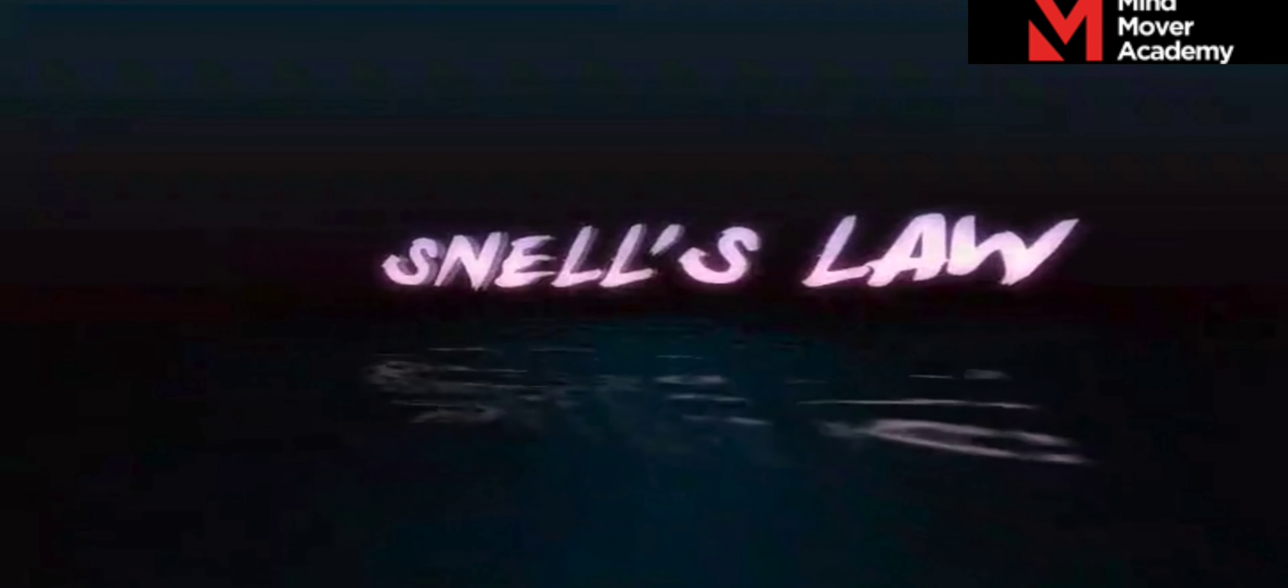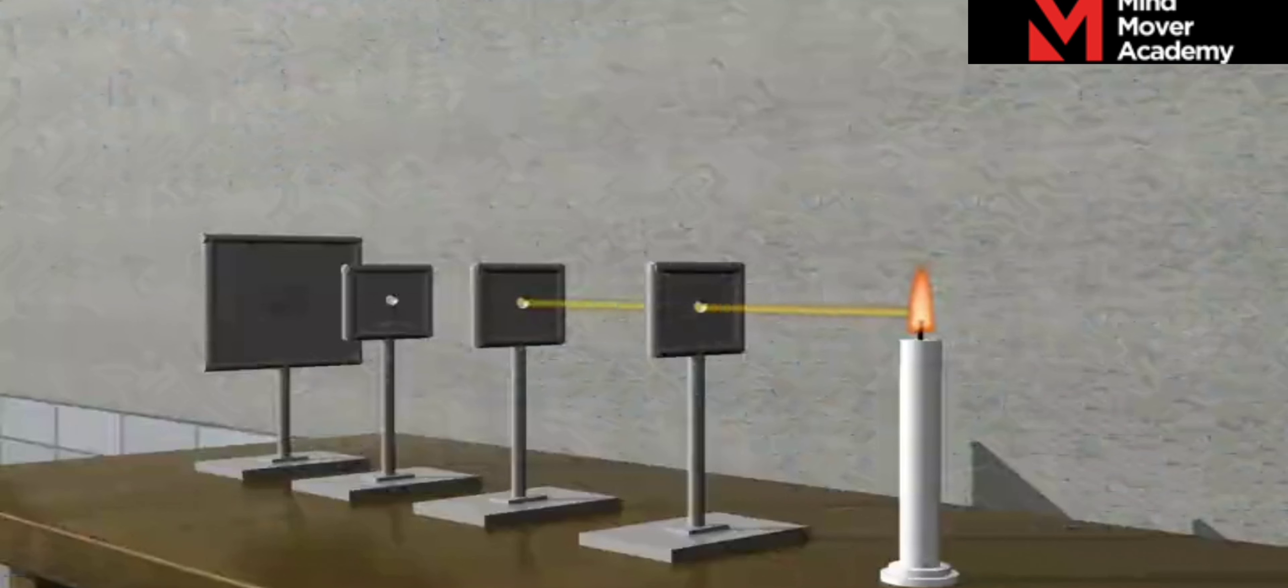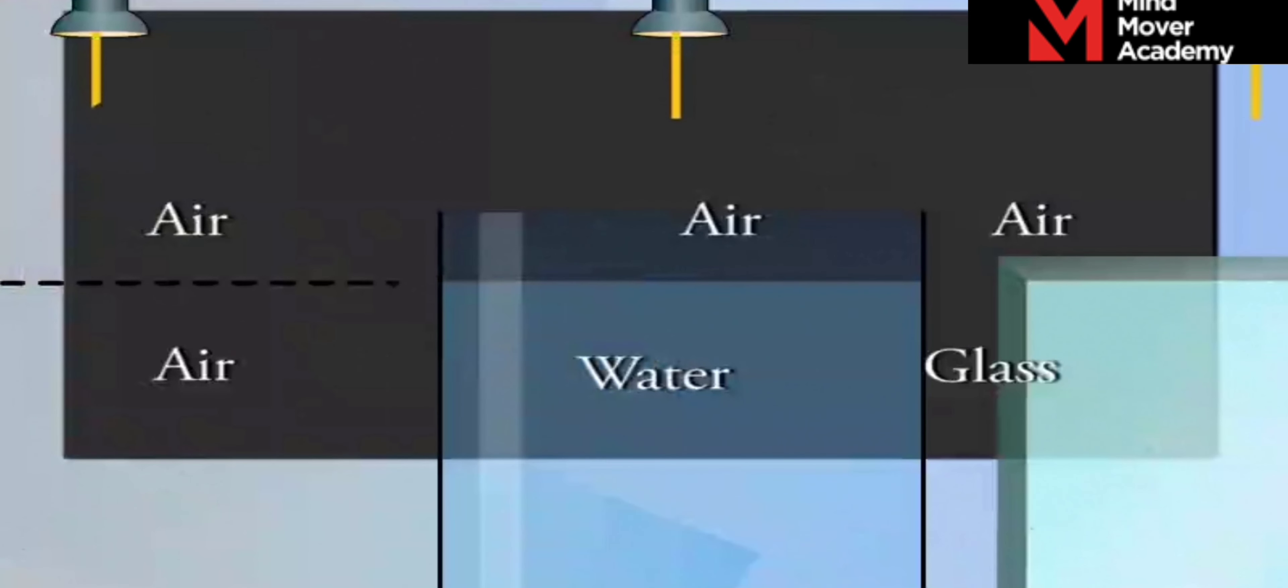Snell's Law. We know that light travels in a straight line through any medium of uniform density. However, the speed of light depends on the nature of the medium in which it travels.